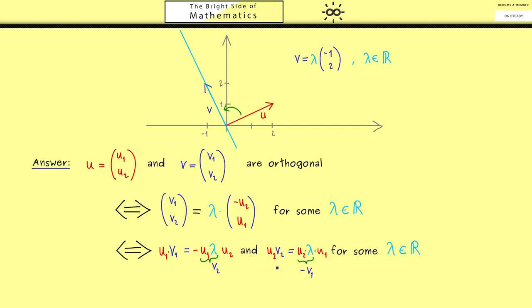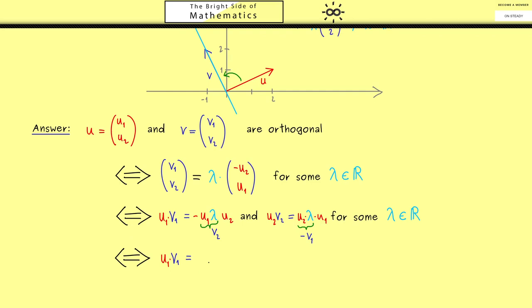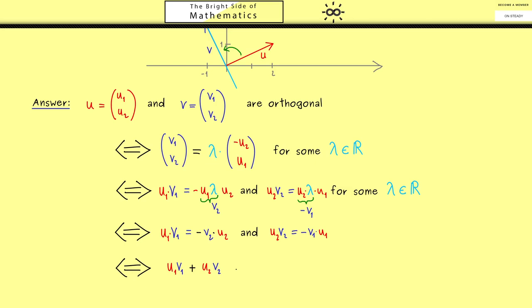So you see in the end we get two new equations where we don't need the factor λ anymore. Now the first equation is u1v1 = -v2u2, and the second equation is u2v2 = -v1u1. And there we see these are exactly the same equations, just a minus sign is on the other side here. Hence we can put both into one formula.